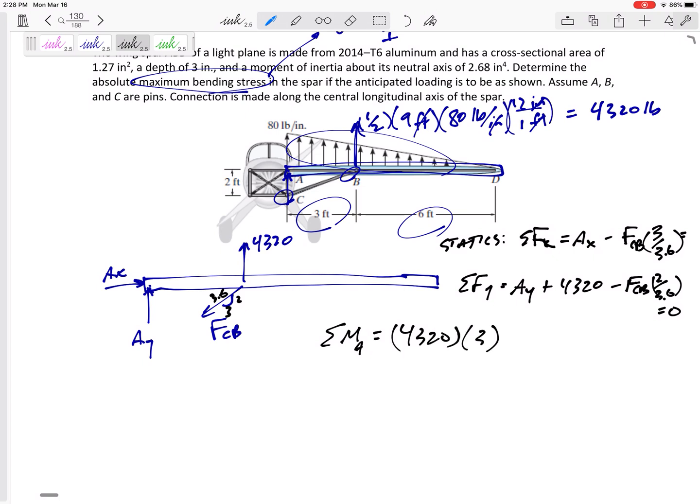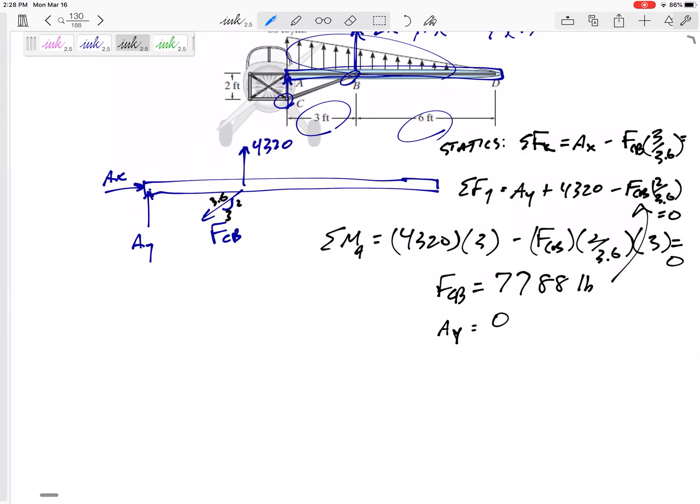I probably should have started with the moment, so sum of the moments about A: 4320 is acting 3 feet away creating a positive moment, but then F times the 2 over 3.6 component is acting 3 feet away creating a negative moment. FCB is 7788 pounds. Plug that back in - Ay is actually zero.